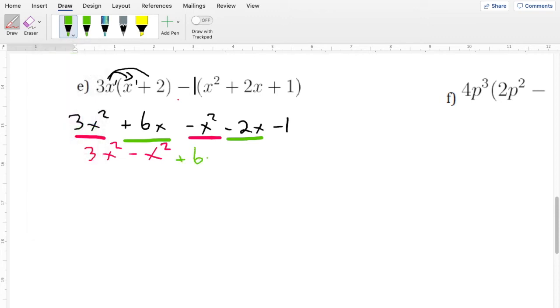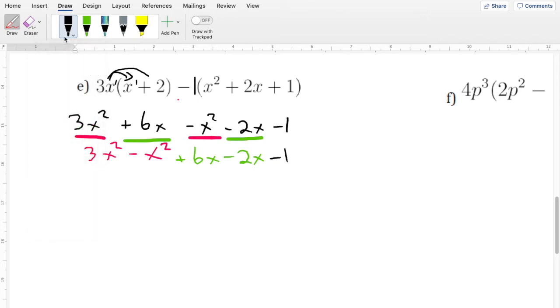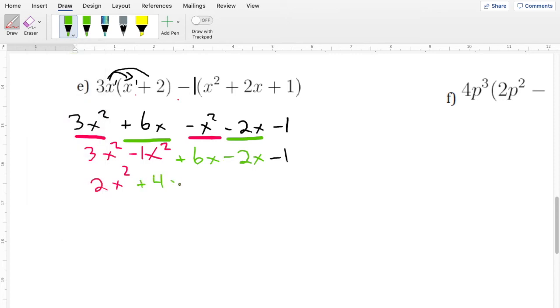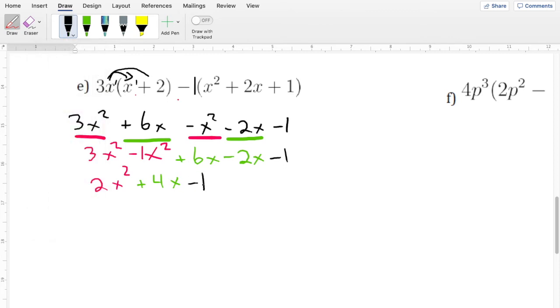So the first part is going to equal 3 minus 1 is going to be 2x squared. And the second part here, 6 minus 2 is going to be positive 4x. And then minus 1. So here's our last equation. All simplified.